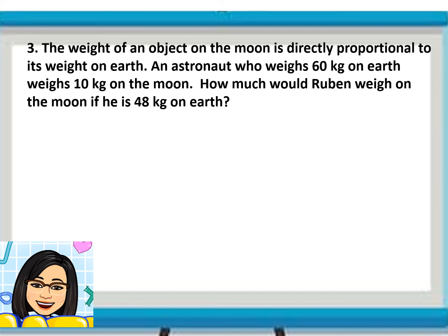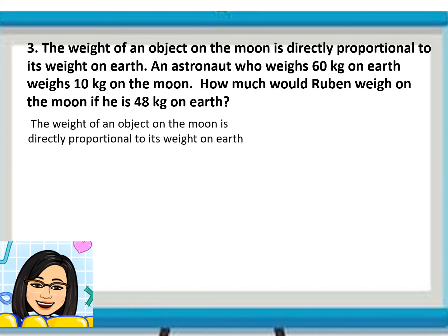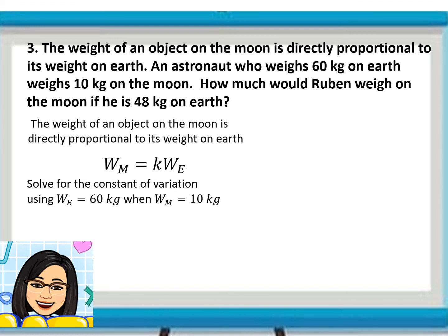Now let us have this problem: 'The weight of an object on the Moon is directly proportional to its weight on Earth. An astronaut who weighs 60 kilograms on Earth weighs 10 kilograms on the Moon.' We represent weight on the Moon as W sub M and weight on Earth as W sub E. The equation is W sub M equals K times W sub E. Let us solve for K by substituting 10 for W sub M and 60 for W sub E, then dividing both sides by 60.